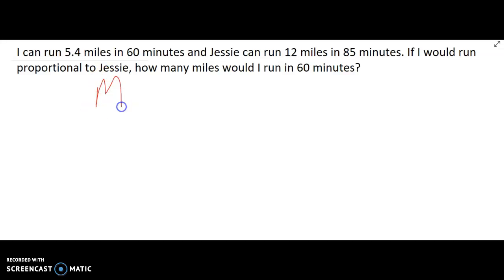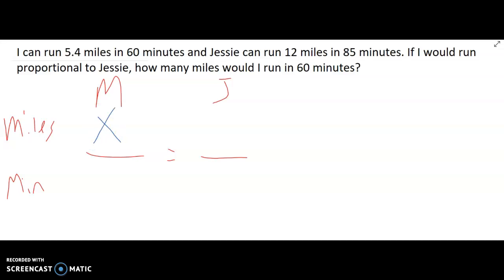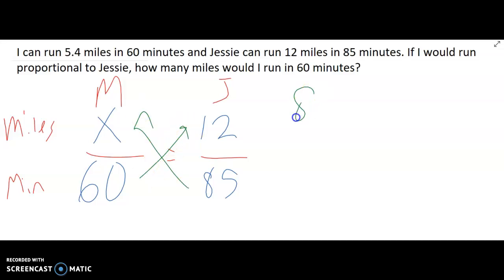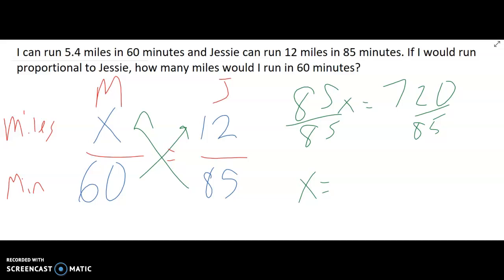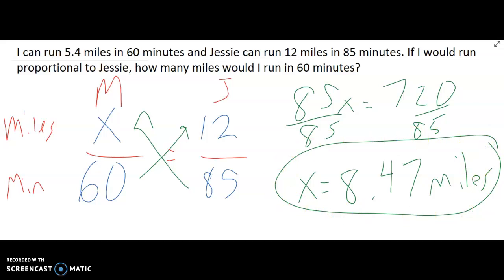We're comparing me to Jesse, and comparing miles to minutes. I'm a big labeler because positioning is important when solving proportions. My unknown is how many miles I would run. I know we're talking about me doing 60 minutes, and Jesse does 12 miles in 85 minutes. Cross-multiplying, 85x equals 720. Dividing both sides by 85 to isolate the variable, if I ran like Jesse, I'd be able to run 8.47 miles in 60 minutes. I'm never going to train hard enough for that — deep down, I'm a lazy runner and I'm happy with my slow pace.